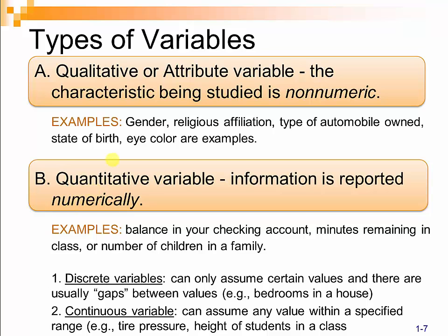We have different types of variables when taking our samples. We have qualitative variables, sometimes called attribute variables, which have the characteristic of being non-numeric — such as different religious affiliations, colors, or flavors of ice cream. Then we have quantitative variables, where information is reported with numbers. Quantitative variables have a subset of discrete variables and continuous variables. Discrete variables can only hold certain values — usually integers, though there are exceptions. An example of a discrete variable is the number of bedrooms in a house.